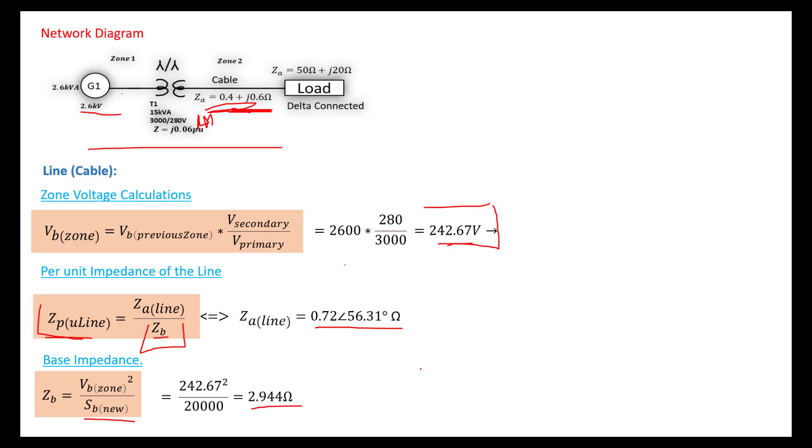Every piece of the puzzle has been found. We can replace into the formula and found a Z per unit line of 0.244 with an angle of 56.31 degrees. But we should not leave it in polar form. We must convert it back into rectangular form so you can see the real part and the imaginary part, the resistive and the inductive part. If this was a minus, we would say it's a capacitive part. This is how you find the per unit value for transformer T1 and the cable.